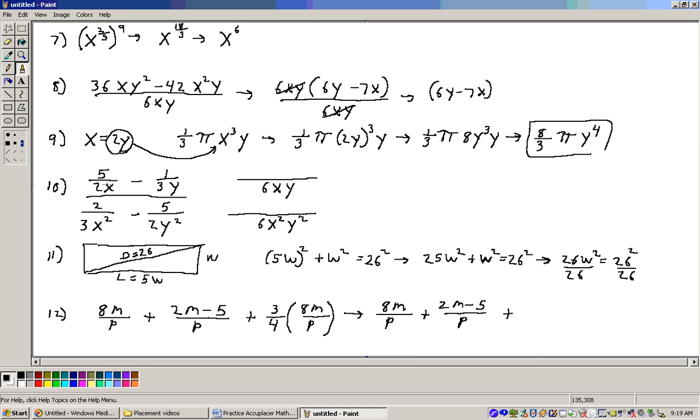Number 10 is really messy here. It's 5 over 2x minus 1 over 3y, all that over 2 over 3x² minus 5 over 2y². This is a complex fraction, so what we have to do is handle each part separately here. We need to get the common denominator up here between these two denominators, 2x and 3y. Well, that common denominator would be 6xy.